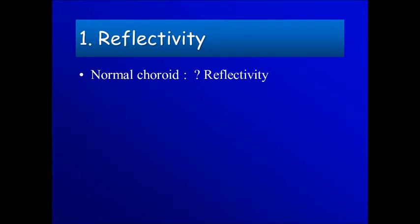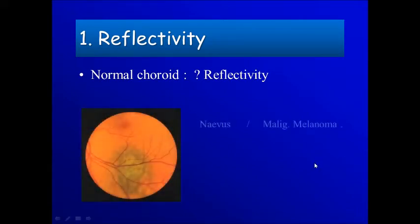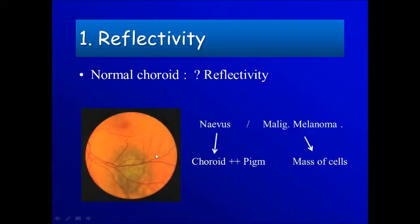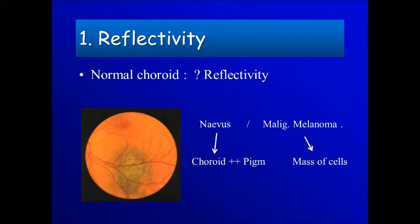What is the normal reflectivity of the choroid? The choroid is formed of small, medium, and large vessels. So if we have a pigmented lesion and are not sure whether it is a nevus or malignant melanoma: if it's a nevus, it's just pigmentation inside a normal choroid, and we should expect reflectivity to be high. In malignant melanoma, which is formed of a mass of cells with no interfaces in between, the reflectivity should be low.